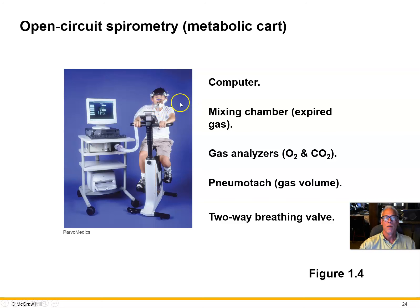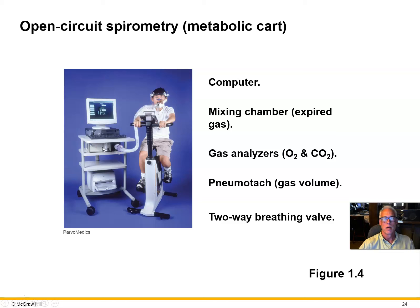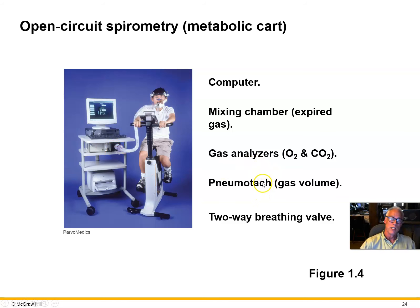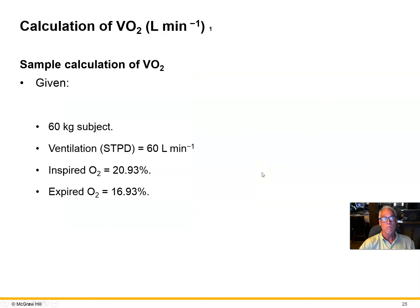Here's the equipment we need to accomplish this. We're going to need a valve that allows the exercising subject to inspire air only from the room into the lungs, and then expire only through an outlet pipe, which delivers all the expired air to a mixing chamber so we can figure out the average amount of oxygen in that expired air. We sample a known amount of air from the mixing chamber into a gas analyzer, which accurately measures the oxygen content as well as the CO2 of that expired air.